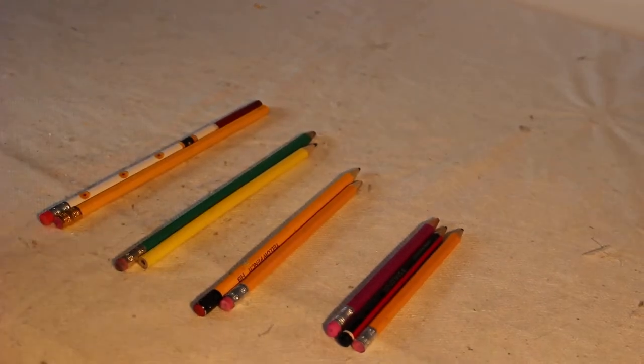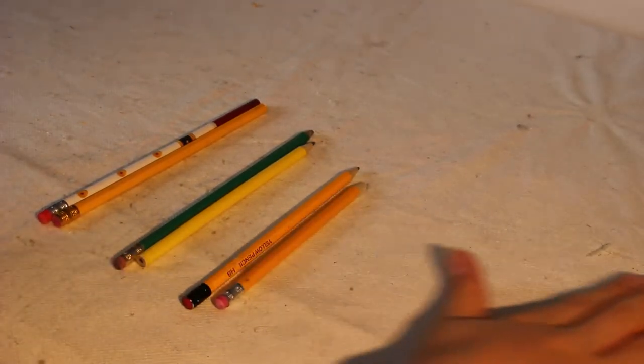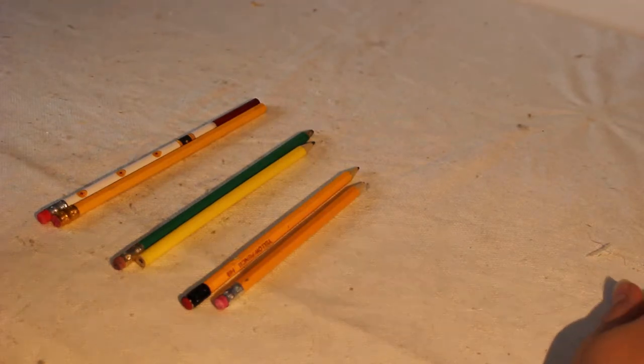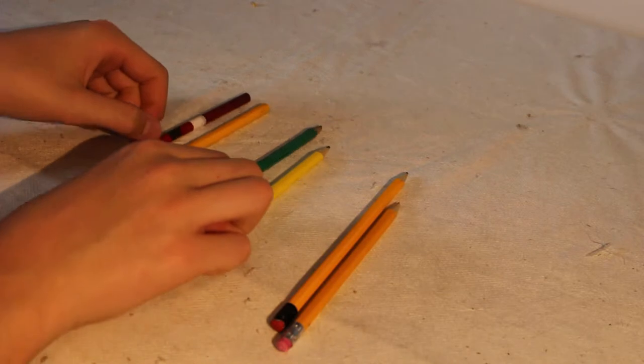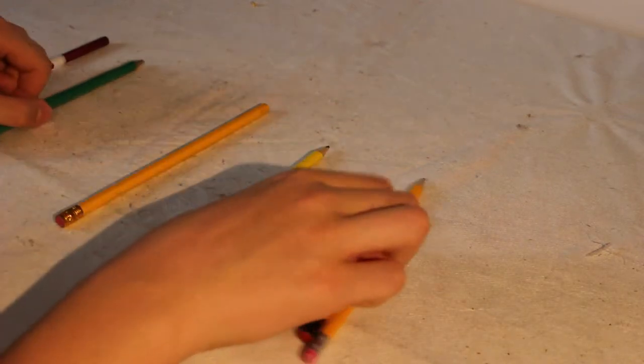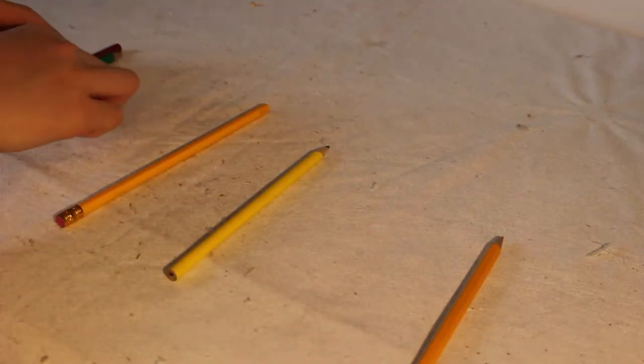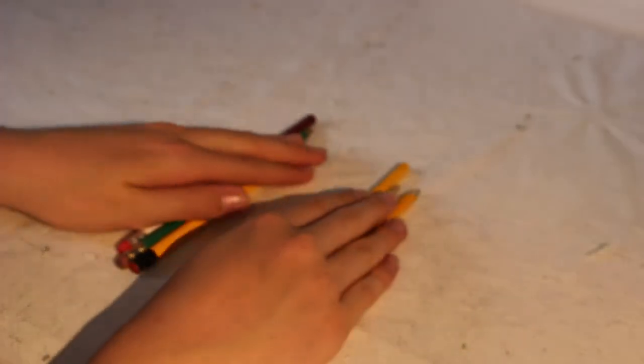Once you've got them in four piles, put the three shortest ones off to the side. You won't need them for now. And you want to take one from each pile to create two piles like this.